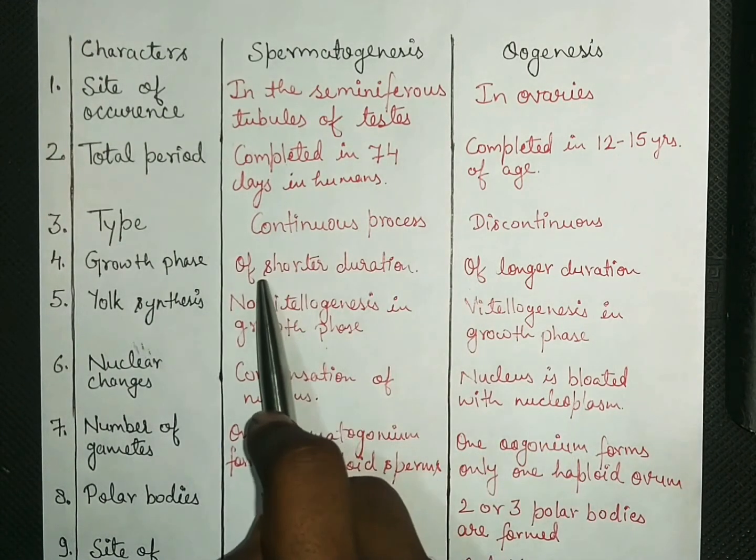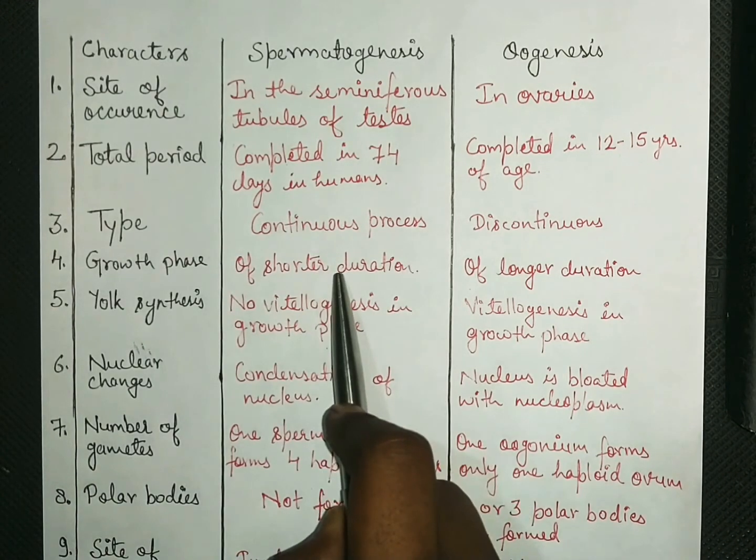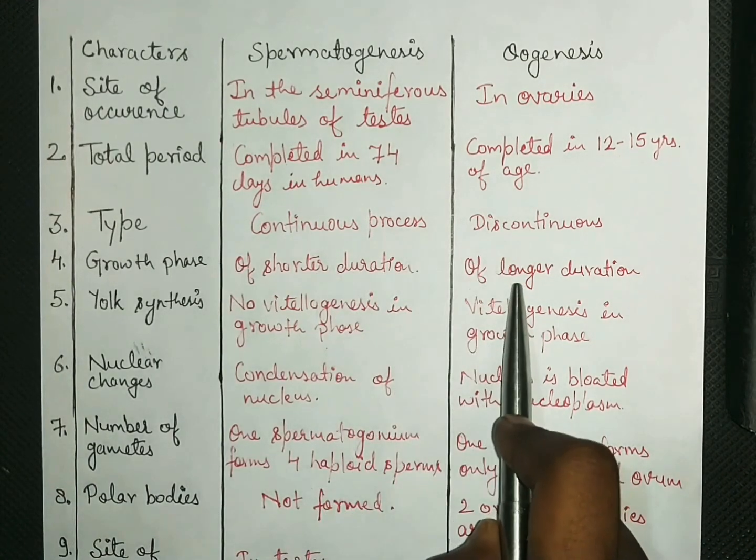The growth phase in spermatogenesis is of shorter duration as compared to the growth phase of oogenesis.